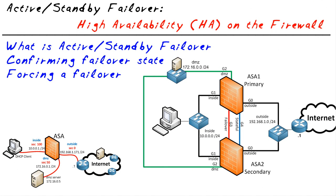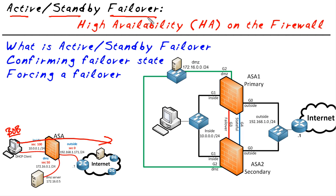What is it that users really want from the networks? There are two basic things: they want the network to work, and they want it to be fairly fast. When a user goes out to the internet, they expect it to just happen. If we want that to happen even through a fault, we can implement fault tolerance by having redundant systems — and that's what Active Standby Failover is all about.